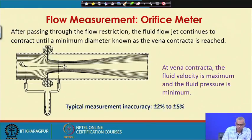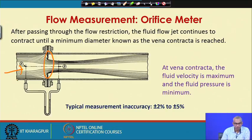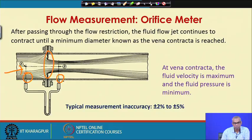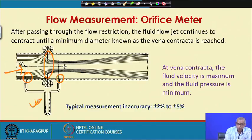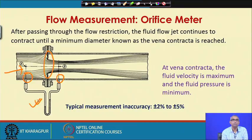The schematic shows an orifice plate where the fluid flows in one direction. There are two pressure tappings for measurement of pressure — one on the upstream and one on the downstream. A manometer or DP cell is attached for measurement of differential pressure. When the fluid passes through the flow restriction, the fluid flow jet continues to contract until a minimum diameter known as the vena contracta is reached.